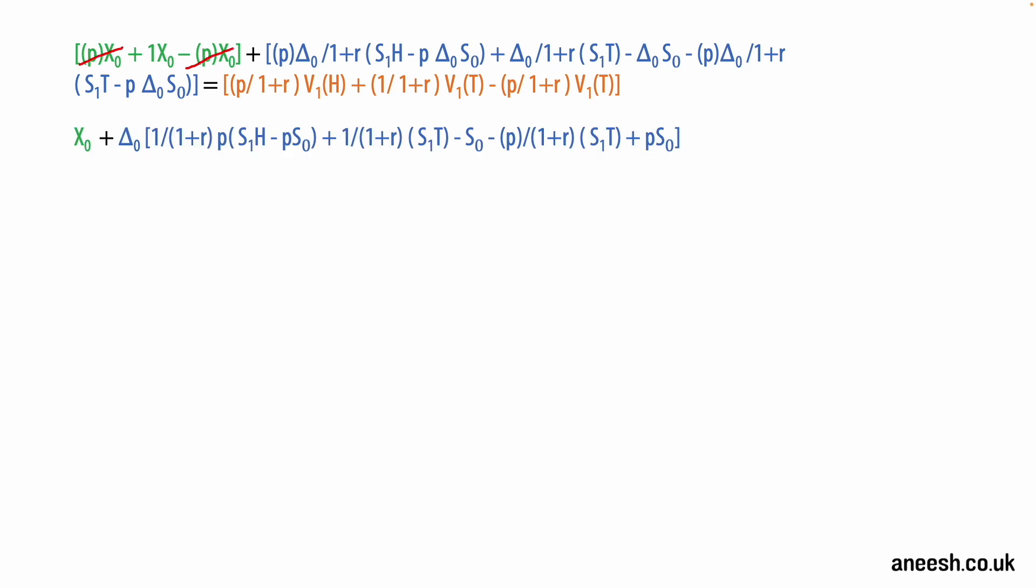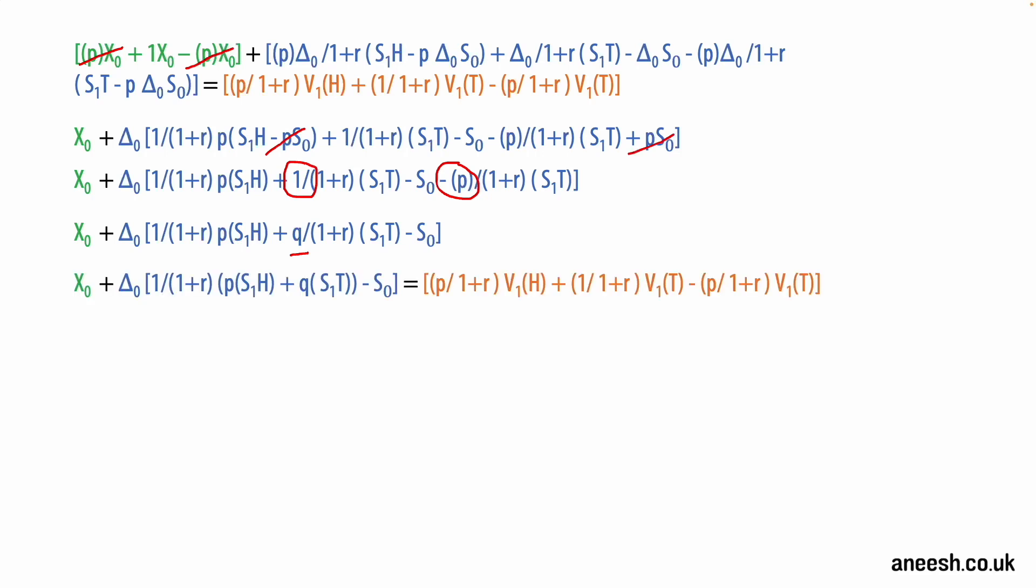We will now simplify this equation by removing p·X0 values that cancel out in green, and then taking delta out of the blue formula. Next we can remove the p·S0 from our blue formula as they also cancel out. And one thing that's quite interesting here is that you might notice that we have 1/(1+r) minus p/(1+r), and (1-p) is also the same as q, so we can simplify this a little bit further by making it q/(1+r).